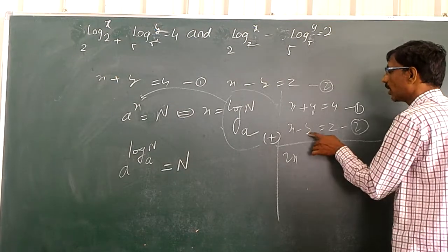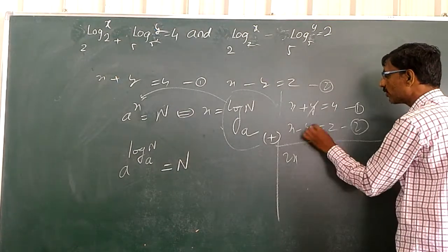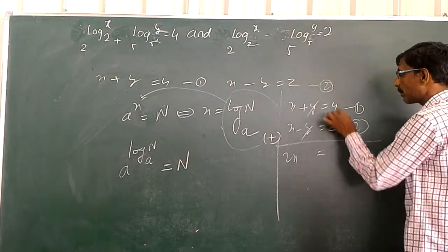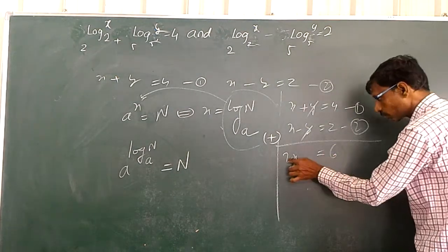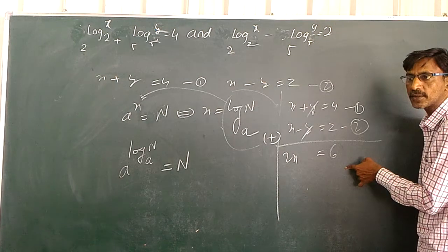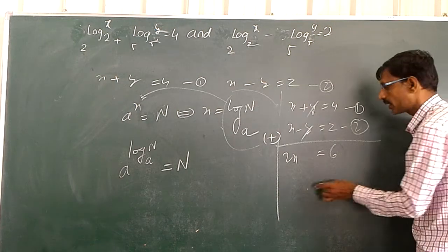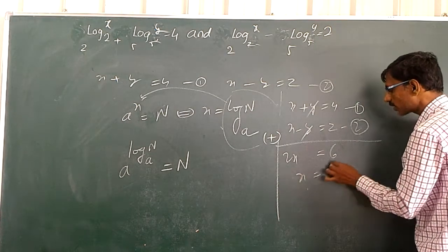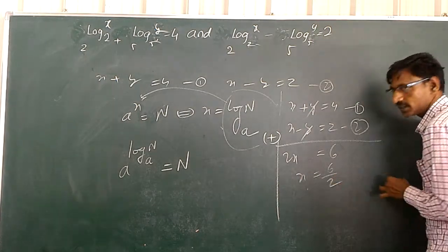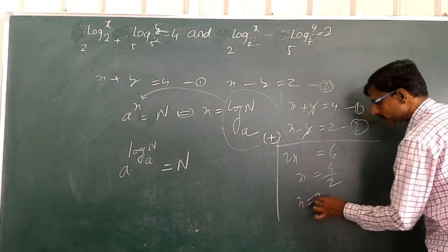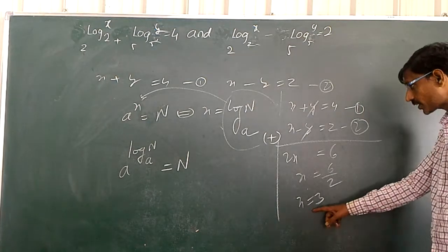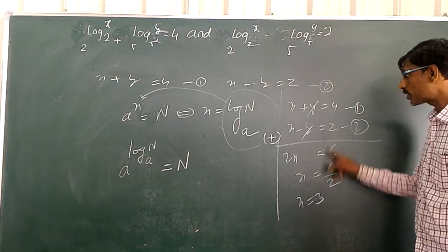2x. x is equal to 6 by 2. x is equal to 3.